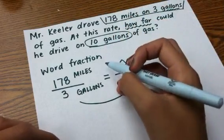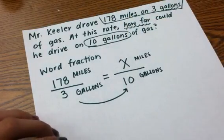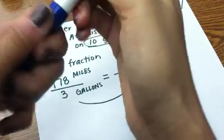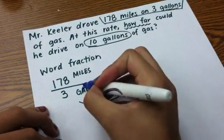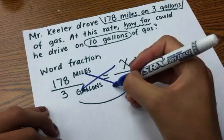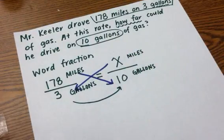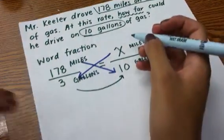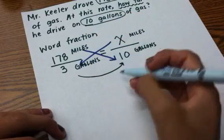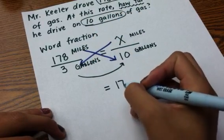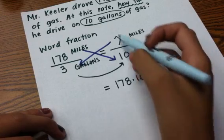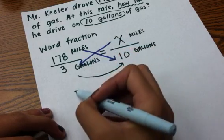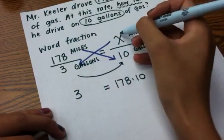When I cross multiply, I'm just going to, I'm going to use another color. I'm just going to crisscross and set up an equation. So, now my equation is going to be, when I cross this way, I get 178 times 10 is equal to, when I cross the other way, 3 times x.